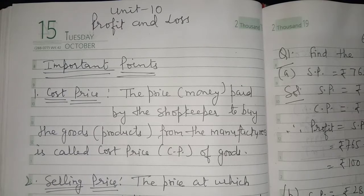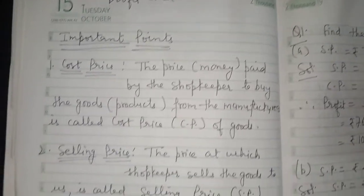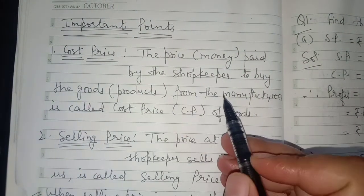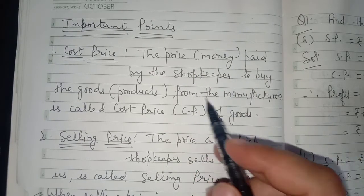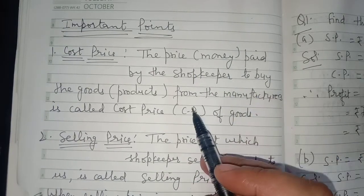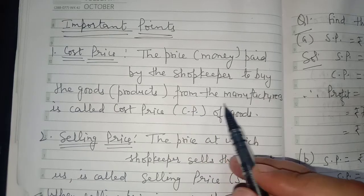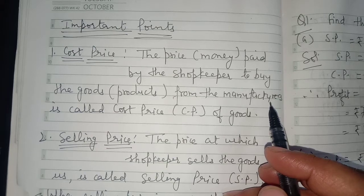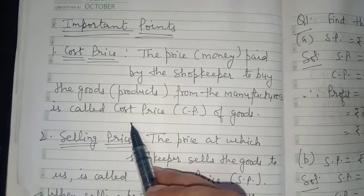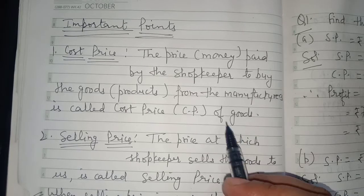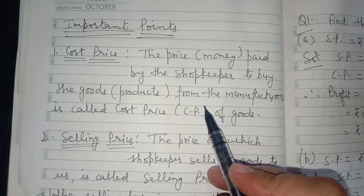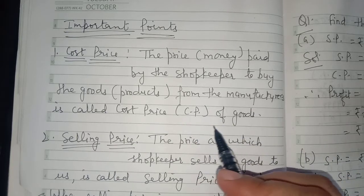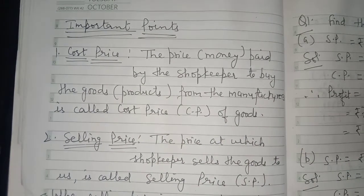We shall start Unit 10, that is Profit and Loss. Before going ahead, I would like to discuss a few important points related to the chapter. First is cost price. Cost price is the price or money paid by the shopkeeper to buy the goods or products from the manufacturer. The manufacturer is the person who makes the things. This is called the cost price of goods.